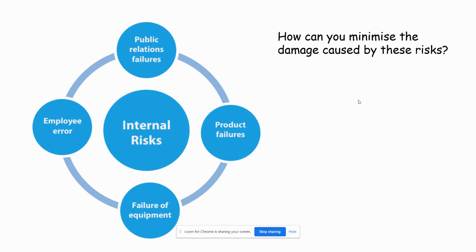For product failures, you want good quality materials from your purchasing department, a well-trained operations department, and strong quality control — catching any failures before they're released to the public. That ties back to Unit 2. For equipment failure, insurance is good for unpreventable failure, but some failure can be prevented with proper training, maintenance, and repairs on that equipment.